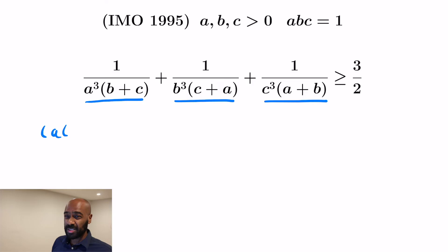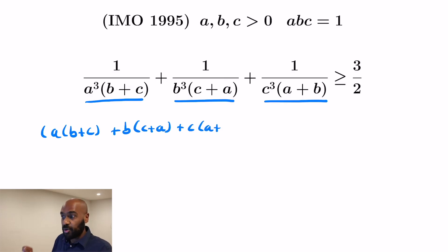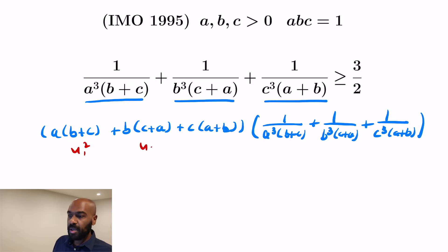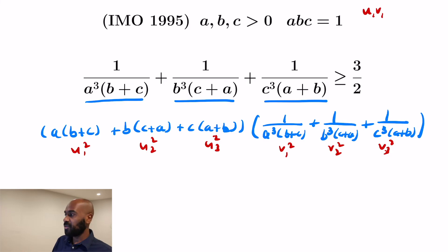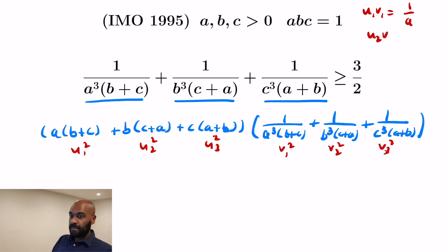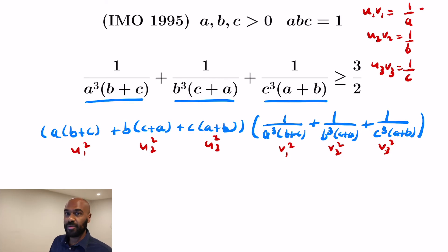We'll think of the denominators as components of vectors and create a second vector with components A·(B+C), B·(C+A), C·(A+B), treating these as squares U₁², U₂², U₃² and V₁², V₂², V₃² respectively. The advantage is that when we multiply matching coordinates, the product of U₁ and V₁ gives 1/A, U₂·V₂ gives 1/B, and U₃·V₃ gives 1/C — a convenient simplification.